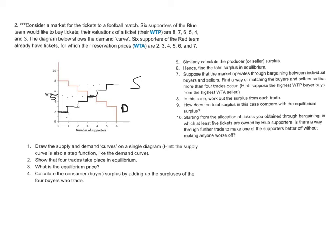Calculate consumer surplus by adding the surpluses of the four buyers that trade. Well, this first buyer would have paid eight but only had to pay five, so they get three. The second buyer would have paid seven but only have to pay five, so they get two dollars of surplus. The third buyer would have paid six but only had to pay five. And the fourth buyer would have paid five and did pay five.